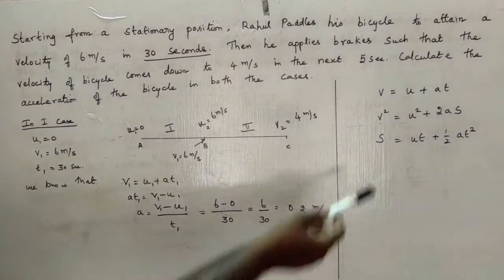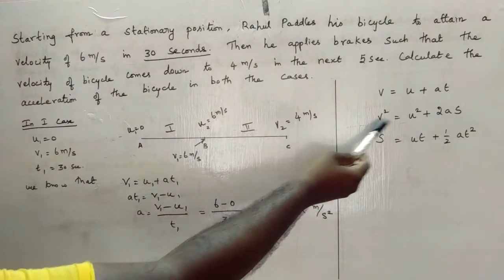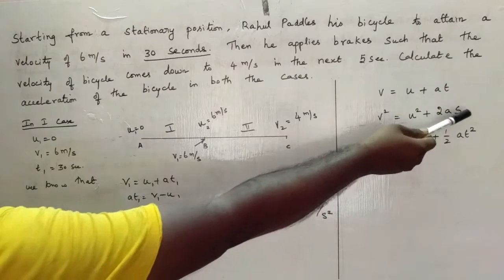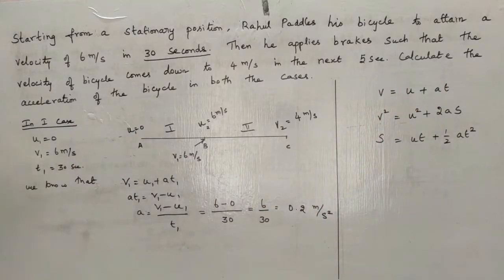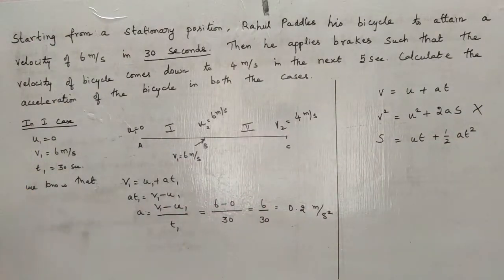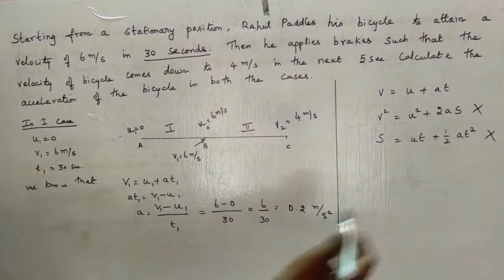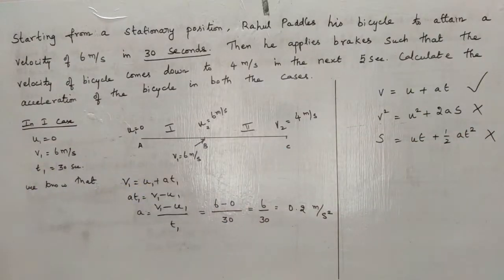If you take the second equation, V² = U² + 2AS, where S is the displacement, in this problem the displacement is not given, so this equation does not work. Going to the third equation, S = UT + ½AT², here also the displacement comes, so this also does not work. I am going to use the first equation: V = U + AT.